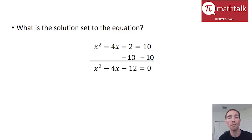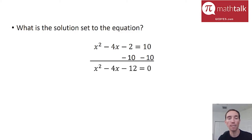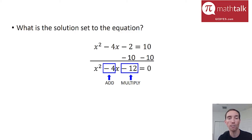When you factor a quadratic equation like this, where the leading coefficient is 1 — meaning there's basically no number in front of your x squared term — there's a trick to doing it. The trick is you want to find two numbers that multiply together to get that last term, negative 12 in this case, and add together to get the coefficient of your x term, in this case negative 4.